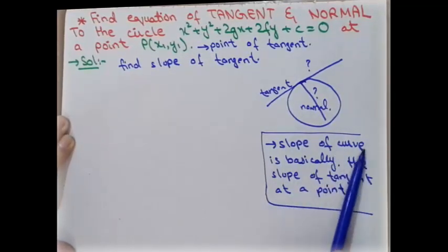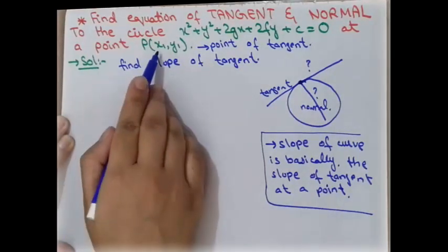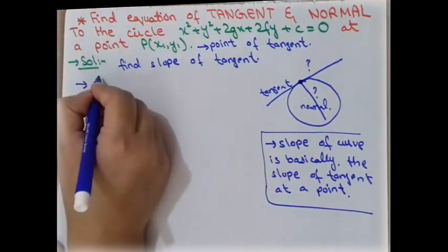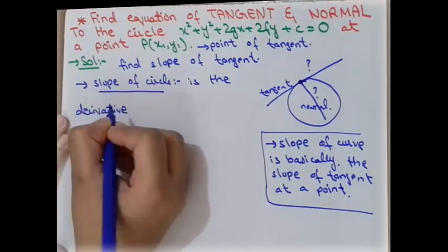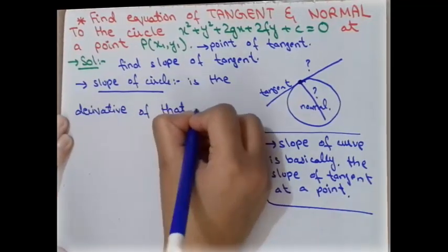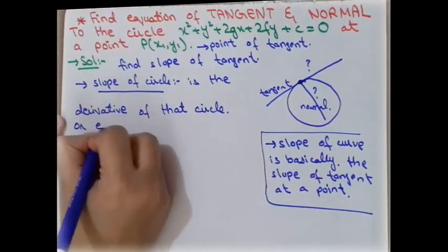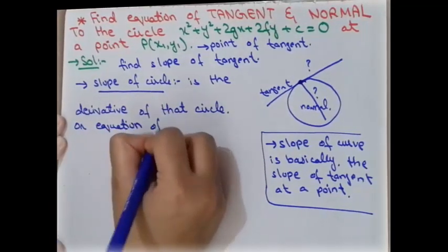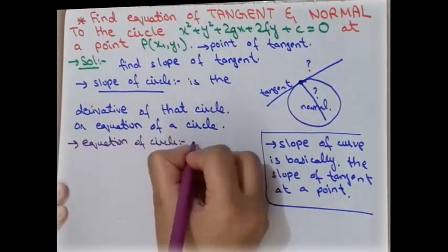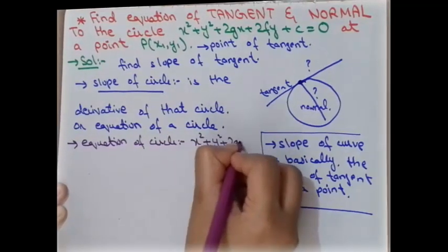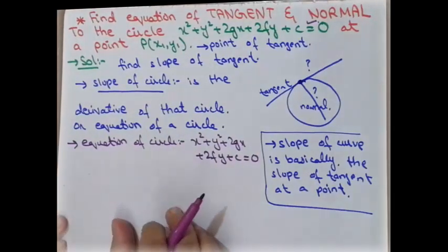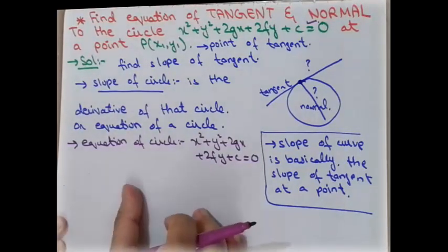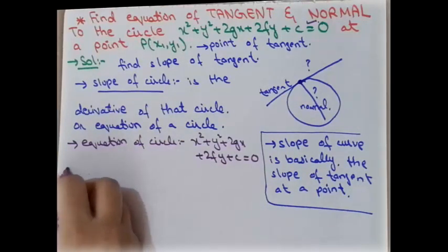The slope of the curve — which is a circle — is the slope of the tangent at point P(x1, y1). To find the slope, we take the derivative of the circle's equation. The general equation of a circle is x² + y² + 2gx + 2fy + c = 0, and we must differentiate this with respect to x.